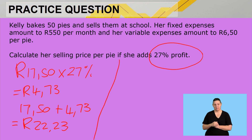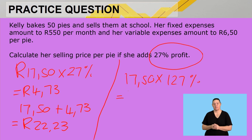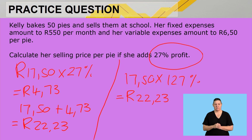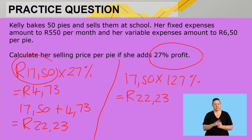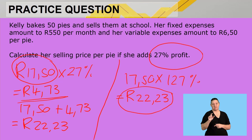Or the shorter way: R17.50 times 127% gets us quickly to the answer of R22.23. So her pies cost R17.50, she's going to sell them for R22.23, and she will be making a profit of R4.73 per pie.